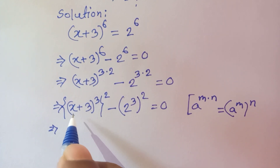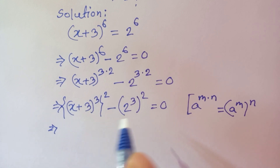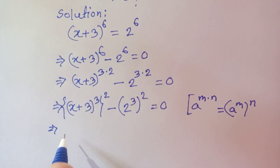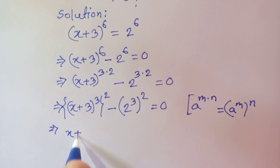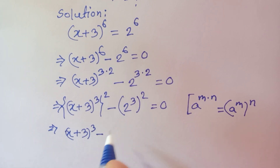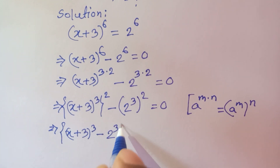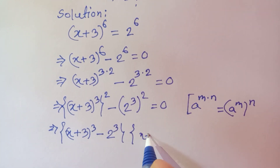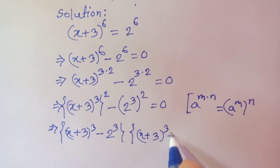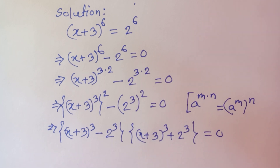If we look at this, it matches the formula a squared minus b squared. Thinking of x plus 3 to the power 3 as a and 2 cubed as b, it becomes: x plus 3 whole cube minus 2 cube, times x plus 3 whole cube plus 2 cube, is equal to 0.